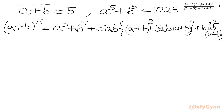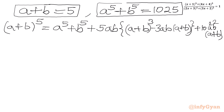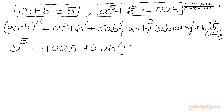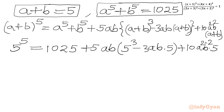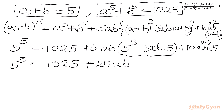Now we know the value of a plus b — it is 5 — and the value of a^5 plus b^5, which is 1025. So we can write 5^5 equal to 1025 plus 5ab times (5^3 minus 3ab times 5) plus 10 times a^2 b^2 times 5. Taking 5 common from the bracket, I can write 5 times 5ab in the bracket.